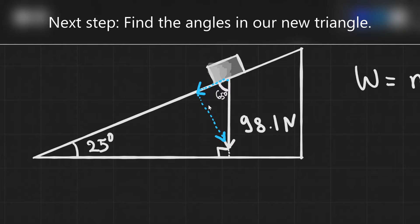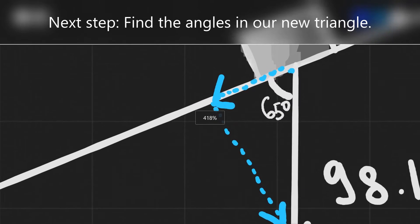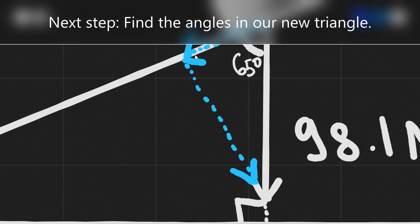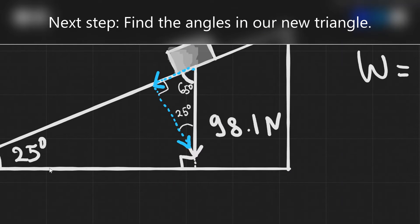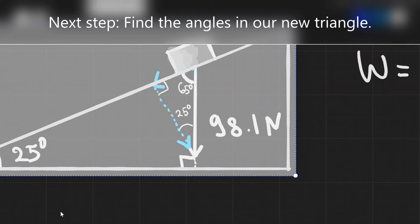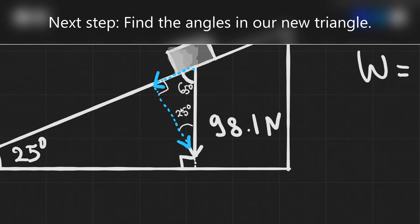Now let's focus on this smaller triangle over here. Remember this component here is the perpendicular component which means that this angle here is 90 degrees. So if this one here is 90, this one here is 65, this means that this angle here has got to be 25 degrees. In other words this angle here 25 has got to be equal to this angle here which is 25 as well.